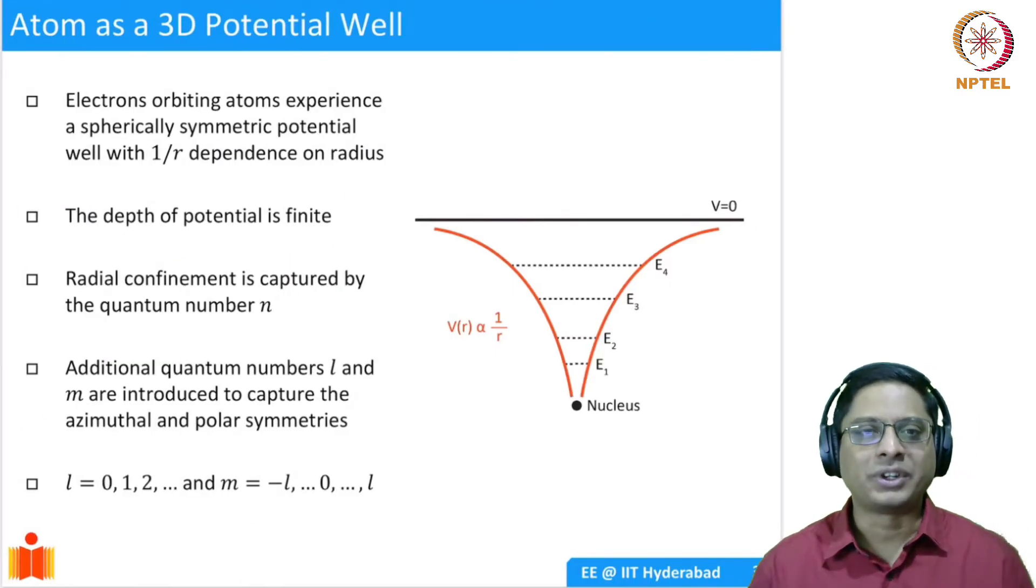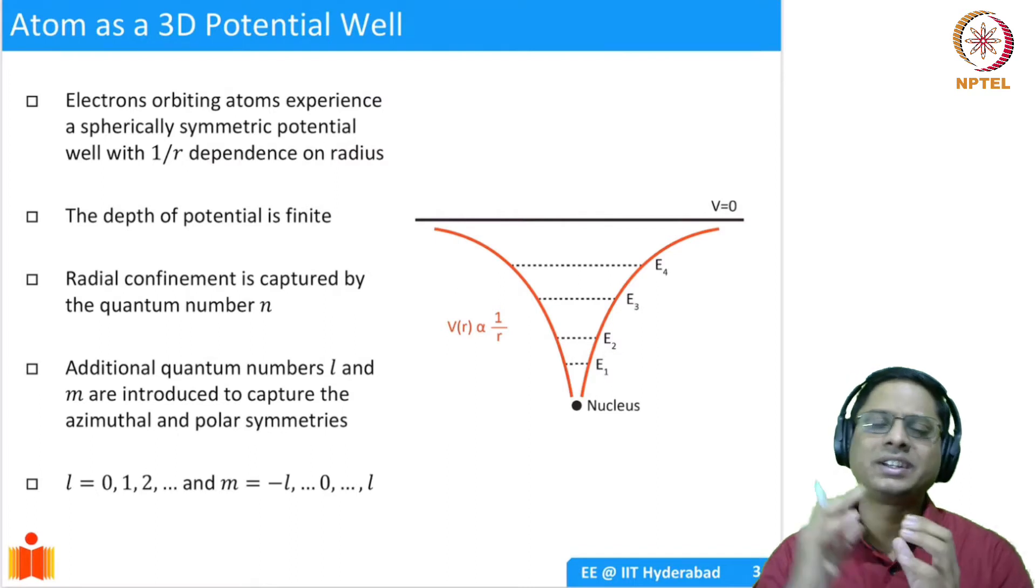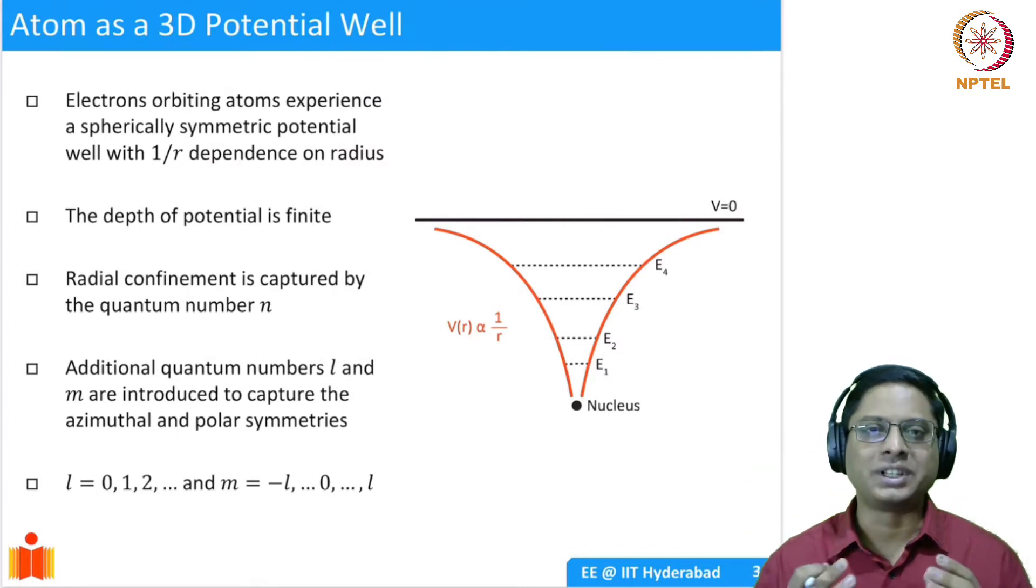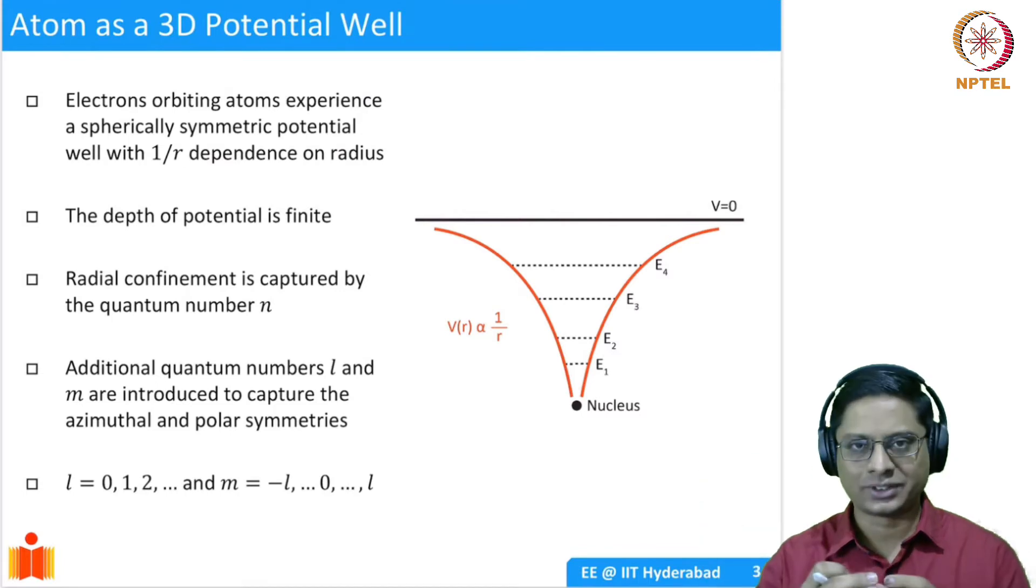So now let's get back to what we were discussing. This potential well, the 1D potential well looks like a toy problem. It's quite simple to solve. How does it help us? That's a question that must be in your minds right now. But I would argue that this is a simple problem, but it actually captures quite a lot of essential features of what happens in atoms. If you think about an atom, an atom is simply consisting of a nucleus and electrons which are orbiting the nucleus.